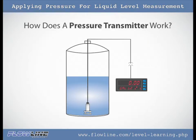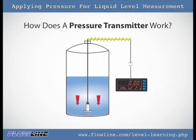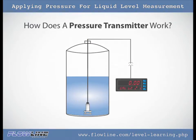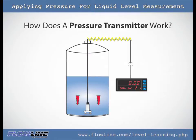A pressure transmitter converts mechanical force in the form of pressure into an electric current. This electric current can be configured to work with an indicator or controller to measure gallons, inches, feet, or meters.